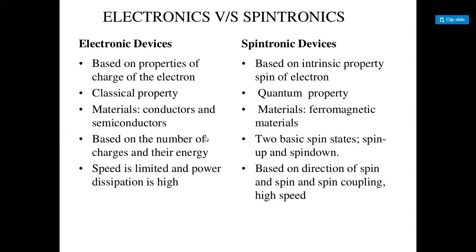What is the difference between electronics and spintronics? Electronic devices are based on the charge properties of an electron — this is a classical property. Spintronic devices are based on the intrinsic quantum property — the spin of an electron. In electronics, conductors and insulators are used; in spintronics, ferromagnetic materials are used. Electronics is based on the number of charges and their energy, while spintronics uses two basic spins — spin up and spin down — denoted as 1 and 0. Electronic devices have limited speed and high power dissipation, but spintronics offers high speed based on the direction of spin and spin coupling.